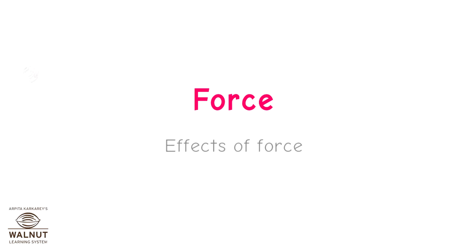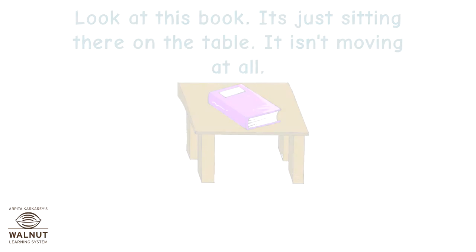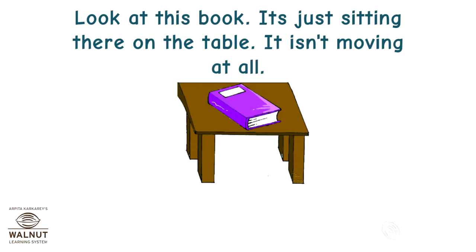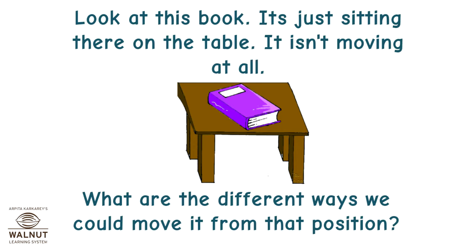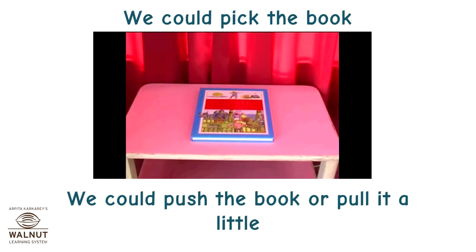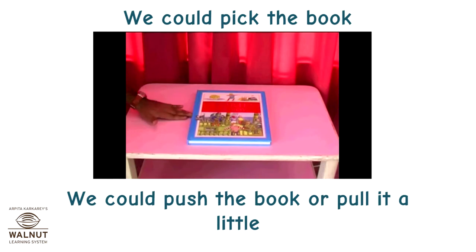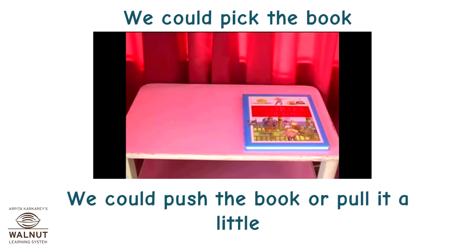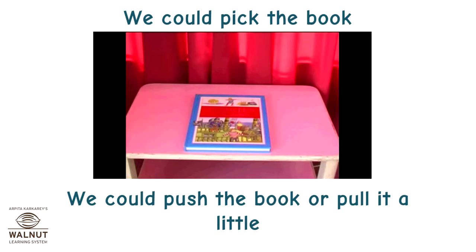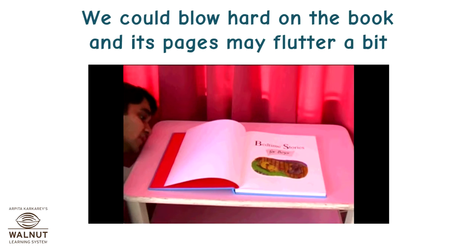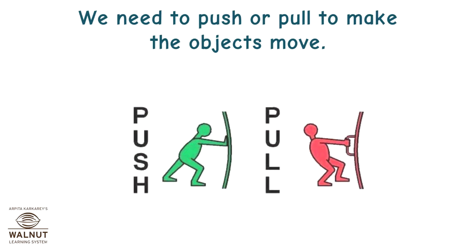Force, effects of force. Look at this book. It's just sitting there on the table. It isn't moving at all. What are the different ways we could move it from that position? We could pick the book. We could push the book or pull it a little. We could blow hard on the book and its pages may flutter a bit. We need to push or pull to make objects move.